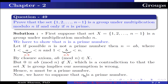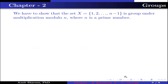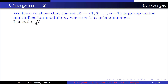Now suppose that n is a prime number. We have to show that the set X containing the elements 1, 2, up to n-1 is a group under multiplication modulo n, where n is a prime number. Let a, b belong to X.